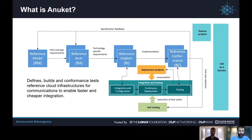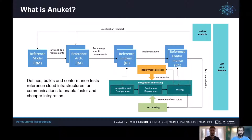The aim of Anuket is to define, build, and conformance test reference cloud infrastructures for telecommunications. This is to enable faster integration of the infrastructures and the applications running on them. Anuket runs several sub-projects, including specification projects which we will cover in more detail.